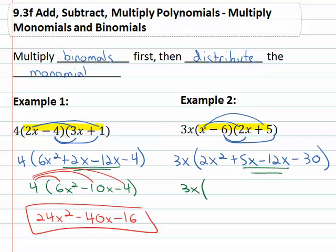We have the 3x still in front, then it's 2x². 5x minus 12x is negative 7x minus 30. And then finally to finish, we just have to distribute the 3x through. 3x times 2x² is 6x³, adding the exponents, remembering the 1 on the x. 3x times negative 7x is negative 21x², and finally 3x times negative 30 is negative 90x.